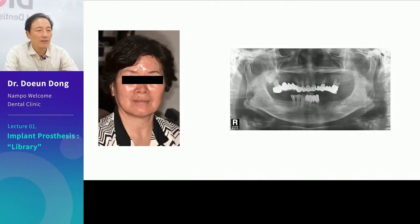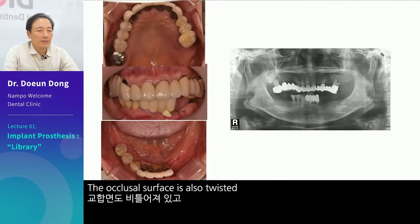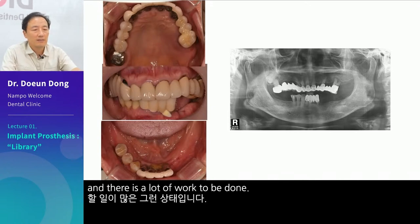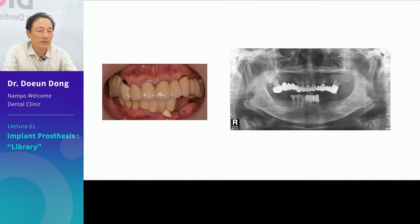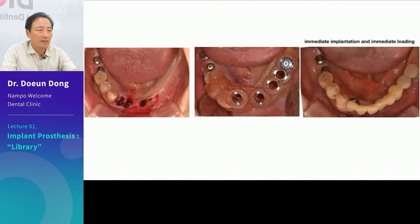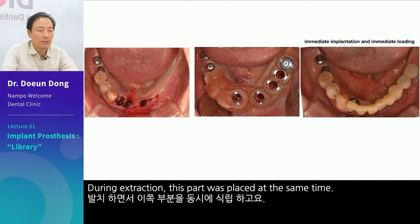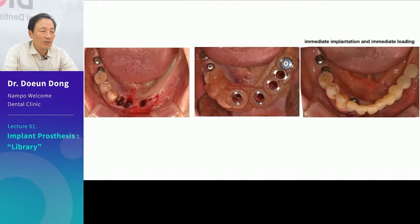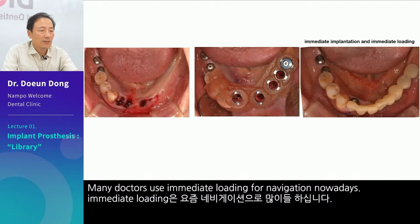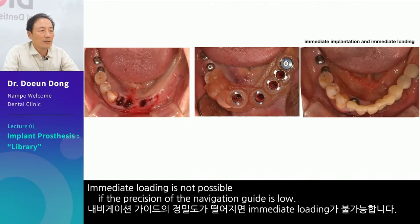Let's look at a patient case. The occlusal surface is also twisted and there is a lot of work to be done — it seems that you have to correct the occlusal plane first. I did an immediate implant placement and even attempted immediate loading together. During extraction, this part was placed at the same time and I even made a prosthesis together. Many doctors use immediate loading for navigation nowadays. Immediate loading is not possible if the precision of the navigation guide is low, because the prosthesis that was made does not fit.